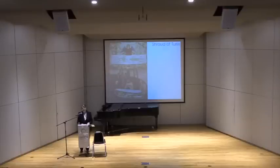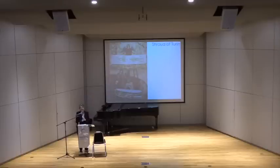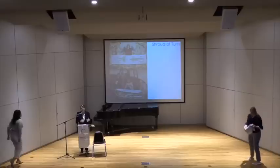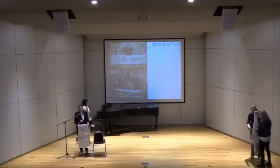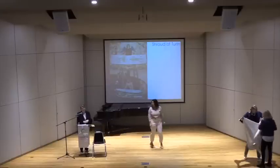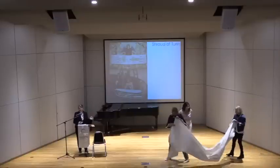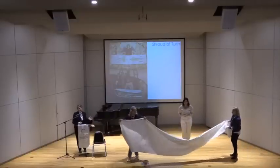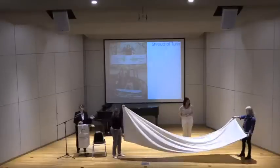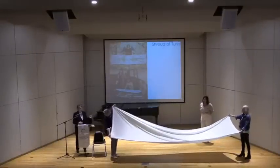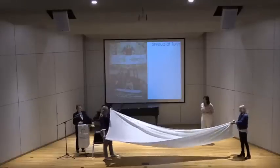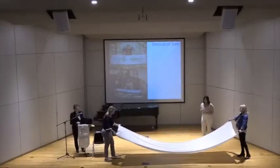To begin, I want to orient you to the Shroud. I have some volunteers helping me because people sometimes have a hard time visualizing how the image is on the Shroud. They're going to first show you how large the fabric is — people are often very surprised by its size. It's over 14 feet long and three and a half feet wide. Raina has agreed to be wrapped up in it so you can get an idea.